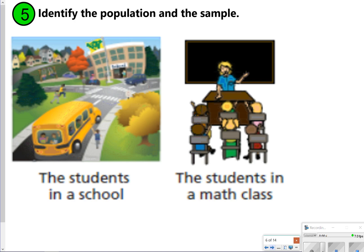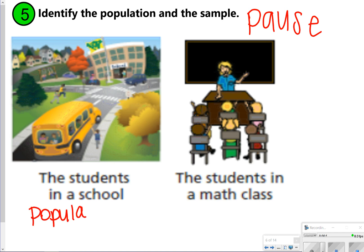For number five, you're going to identify which one is the population and which one is the sample. The population is the students in the school, because that includes everyone in the school. The students in a math class would be the sample — it's not everyone, it's just a portion of the population.